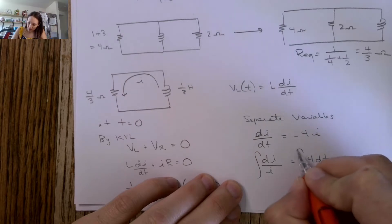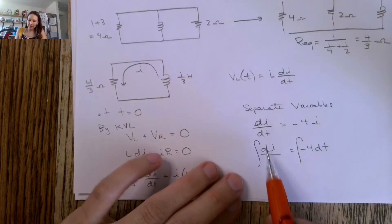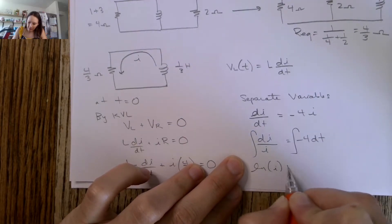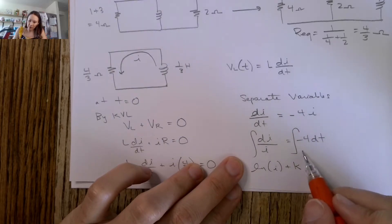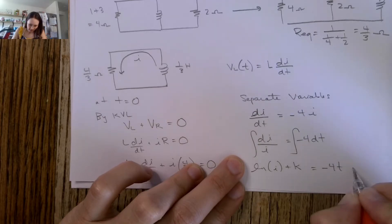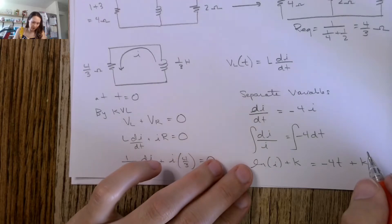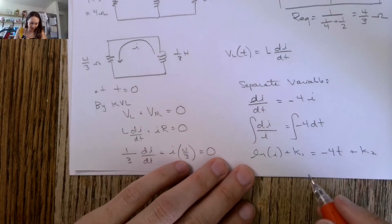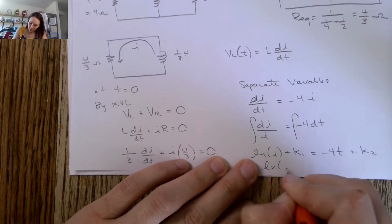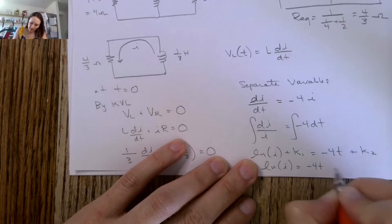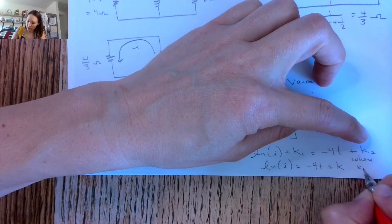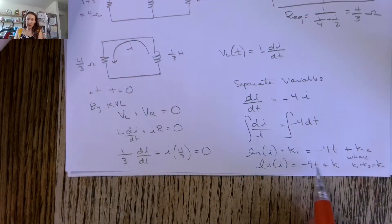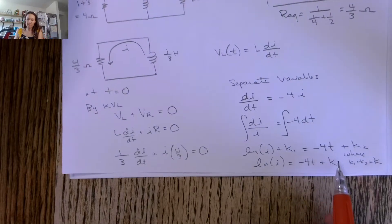To undo the derivative terms, we take the integral of both sides. On the left-hand side, the integral of 1/I with respect to I is the natural log of I plus some constant. On the right-hand side, the integral of negative four dt is just negative four t plus another constant. Combining these constants into one unknown constant k, we have: ln(I) equals negative four t plus k, where k equals k1 plus k2.